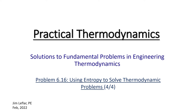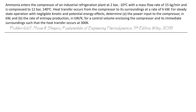Let's solve another thermodynamic problem, this one involving a refrigerant compressor. Ammonia enters the compressor of an industrial refrigeration plant at 2 bar and minus 10 degrees C with a mass flow rate of 15 kilograms per minute, and it's compressed to 12 bar and 140 degrees C. Heat transfer occurs from the compressor to its surroundings at a rate of 6 kilowatts. For steady-state operation with negligible kinetic and potential energy effects, determine A, the power input to the compressor in kilowatts, and B, the rate of entropy production in kilowatts per degree Kelvin.